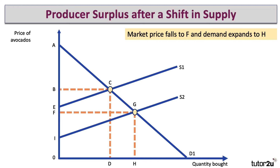The new equilibrium is at point G, and therefore the quantity demanded expands from D to H. We move down the demand curve from point C to G. So, an increase in supply causes the market price to go down and the quantity bought and sold to go up.